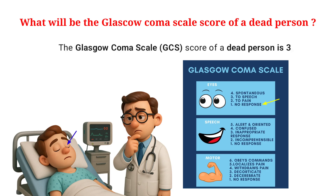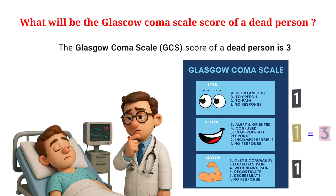For a dead person, the score for eye opening is 1 — no eye opening. For verbal response, the score is again 1 — no verbal response. For motor response, the score is again 1 — no motor response. Total: 1 plus 1 plus 1 equals 3.